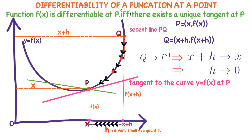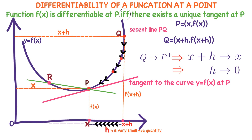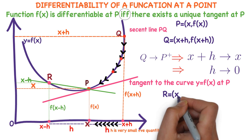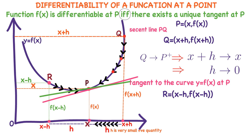Now observe the secant line PR. R is at a distance of h units to the left of P, so R is at a distance of x minus h units from the origin. This length is x minus h, and the height is f of x minus h. So R is x minus h comma f of x minus h. As R is approaching P from the left, the secant line PR is becoming tangent to the curve y equals f of x at point P.